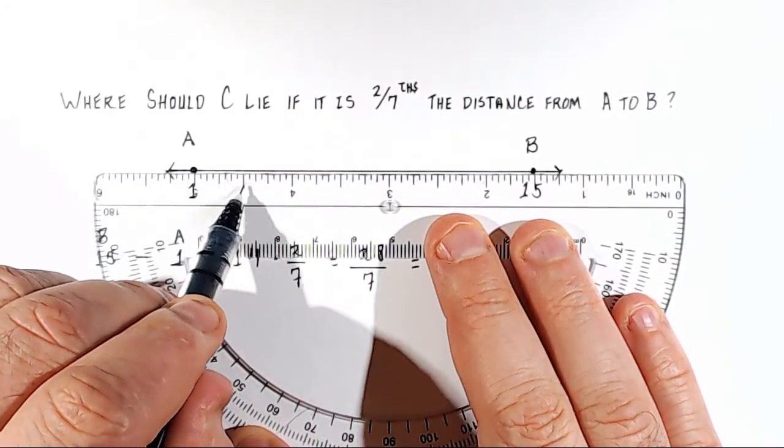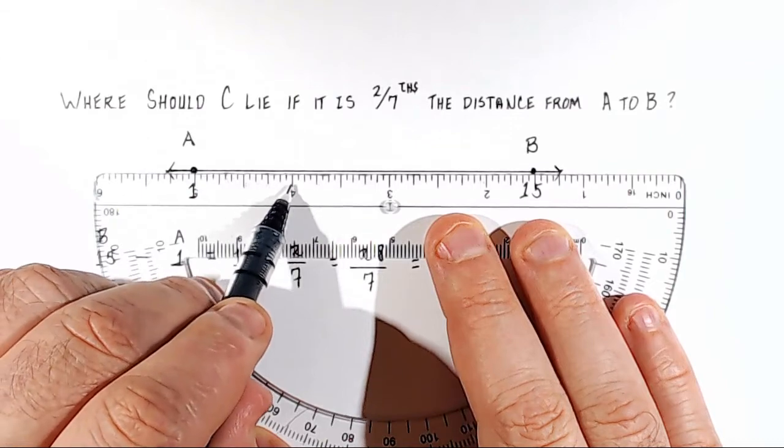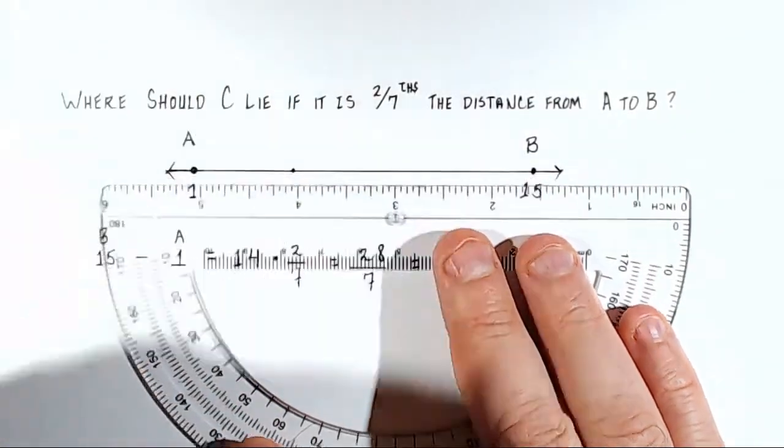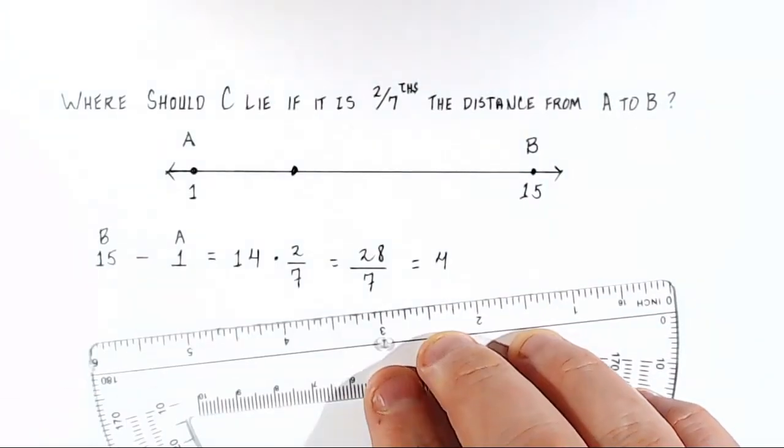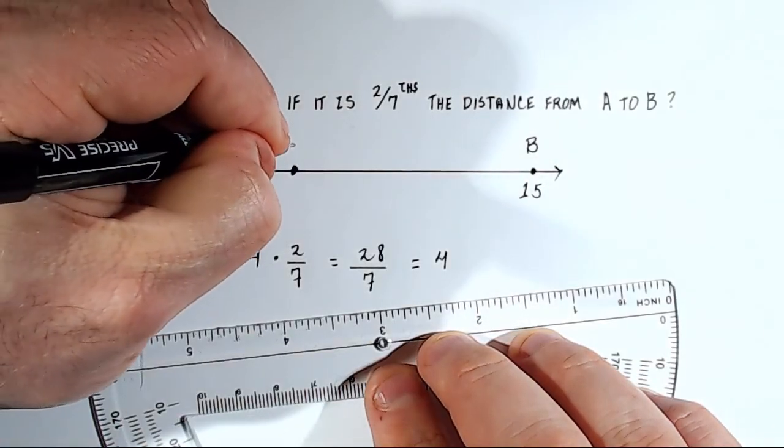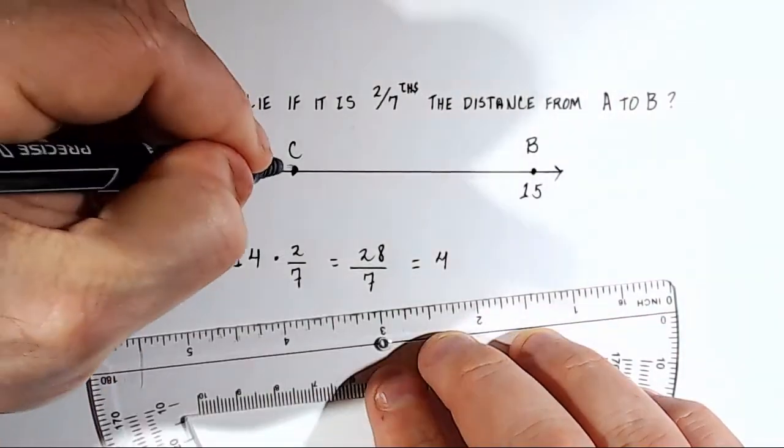One, two, three, four. So right here is where point C will lie at 4.